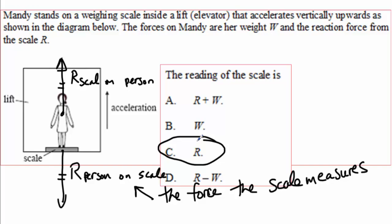Now, if our elevator was not accelerating upwards, R would be equal to the weight. Because our elevator is accelerating upwards, R will in fact be bigger than the person's weight.